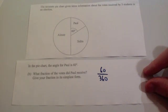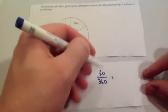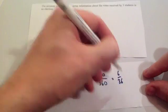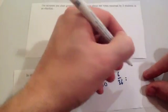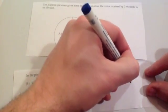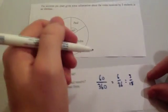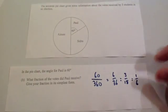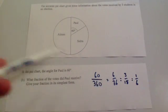So if we simplify this fraction down, we'll find out what fraction of the votes Paul received. Let's divide both of them by 10. So we take off a zero. We get 6 over 36. Half both of them, you're going to get 3 over 18. And they're both in the 3 times table. So divide both of those by 3 and you get 1 over 6. So that means that Paul received a sixth of the votes.